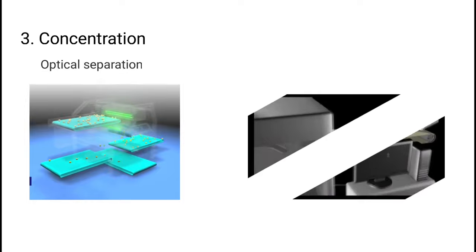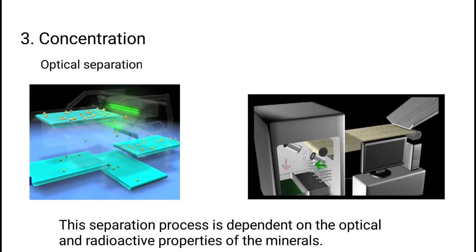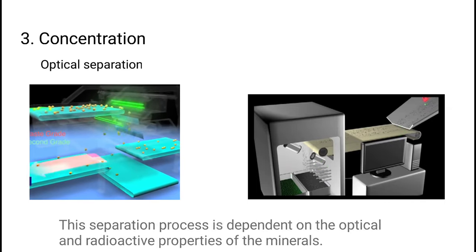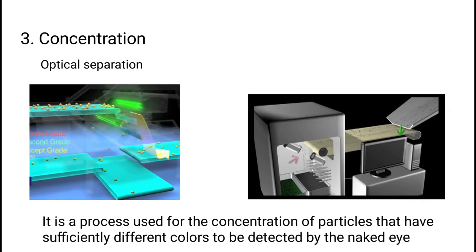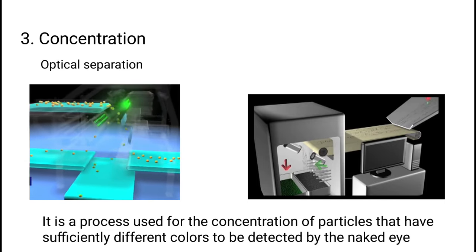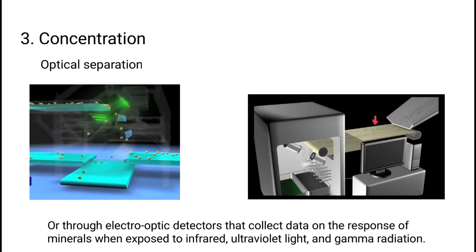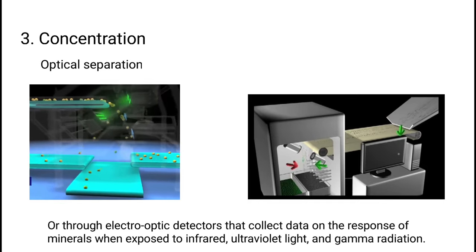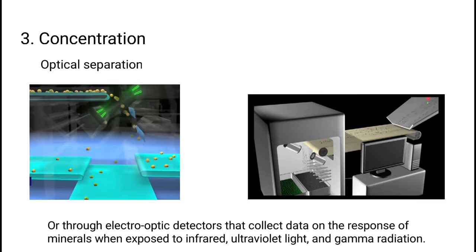Optical separation: this separation process is dependent on the optical and radioactive properties of the minerals. It is used for the concentration of particles that have sufficiently different colors to be detected by the naked eye or through electro-optic detectors that collect data on the response of minerals when exposed to infrared, ultraviolet light, and gamma radiation.